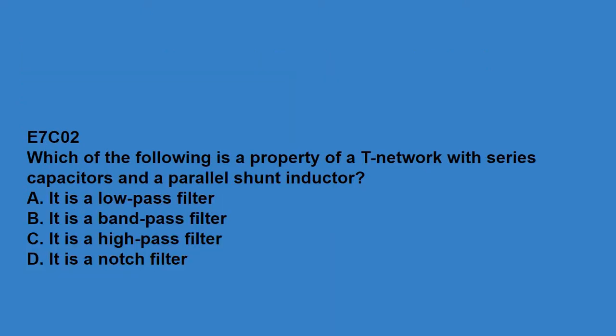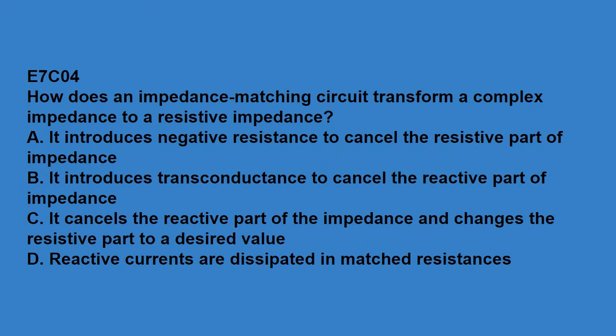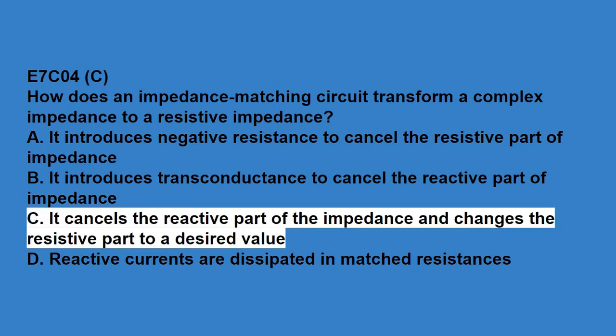E7C02, which of the following is a property of a T-network with series capacitors and a parallel shunt inductor? It is a high-pass filter. E7C03, what advantage does a series L pi L network have over a series L pi network for impedance matching between the final amplifier of a vacuum tube transmitter and an antenna? Greater harmonic suppression.